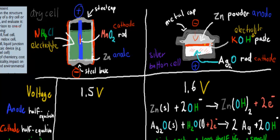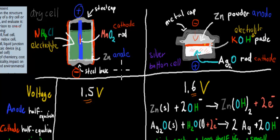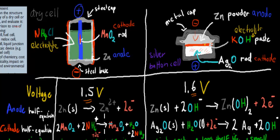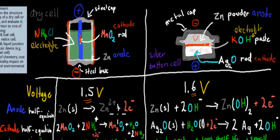In terms of voltage, the dry cell produces 1.5 volts whereas the button cell produces 1.6 volts — very similar, so there's not much difference between the cells in terms of how much electricity they produce. You also need to know the anode and cathode half equations, as for 5, 6, or 7 mark questions it's always good to give chemical equations.